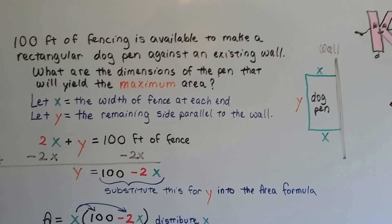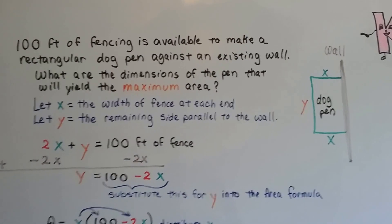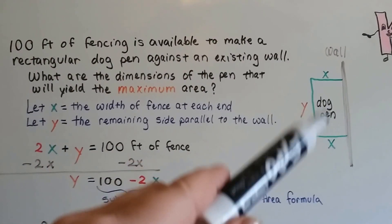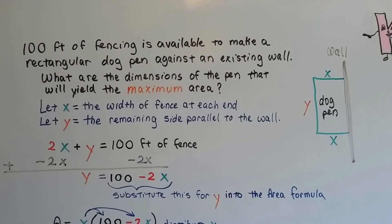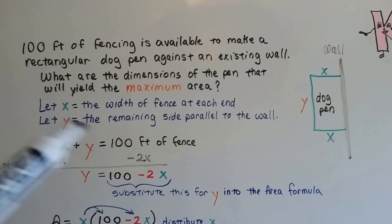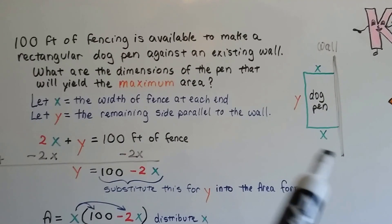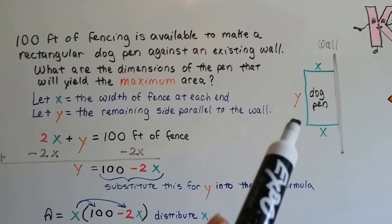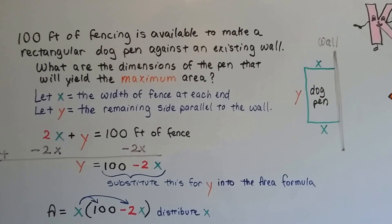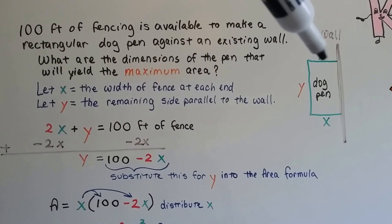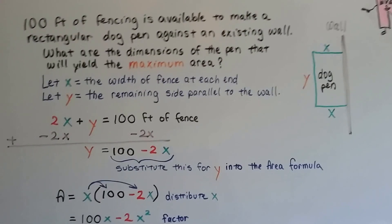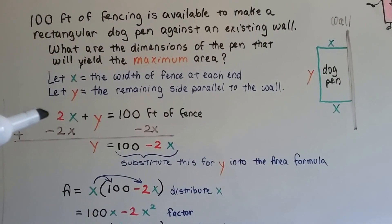What are the dimensions of the pen that will yield the maximum area? What's the largest dog pen that we can make with that 100 feet of fencing? We're going to let X equal the width of the fence at the ends, and Y is going to be the remaining side parallel to the wall. So now we have 2X + Y = 100 feet of fence.